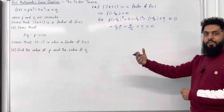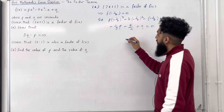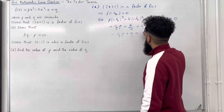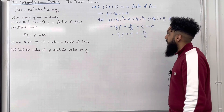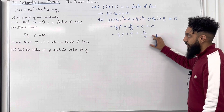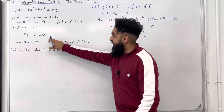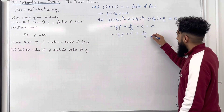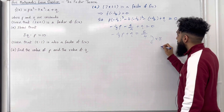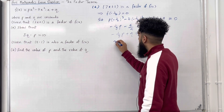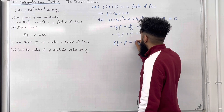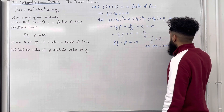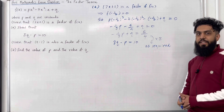Taking the minus 5 over 4 to the right-hand side gives minus 1 over 8p plus q equals 5 over 4. To get from 5 over 4 to 10, I multiply the entire equation by 8. This gives 8q minus p equals 10, as required. This completes part a of the exam question.